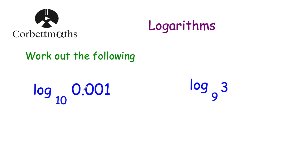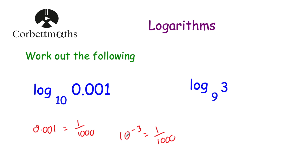This time we've been asked to work out log to base 10 of 0.001. What power would you raise 10 by to get 0.001? Now, 0.001 is one thousandth, or 1 over one thousand — that's the units, then tenths, hundredths, thousandths. So we need: what power of 10 gives 1 over one thousand? 10 to the power of negative 3 equals 1 over one thousand, because that's 1 over 10 cubed, and 10 cubed is a thousand. So log to base 10 of 0.001 is equal to negative 3.